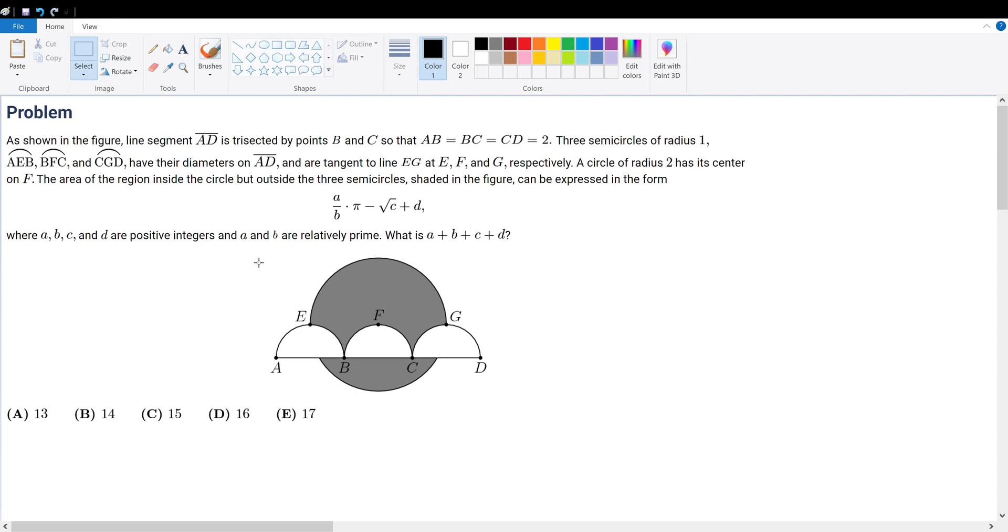We're told that the three semicircles shown have a radius of 1, and that AEB, BFC, and CGD have diameters on AD and are tangent to EG at E, F, and G, respectively.